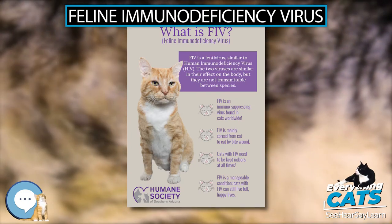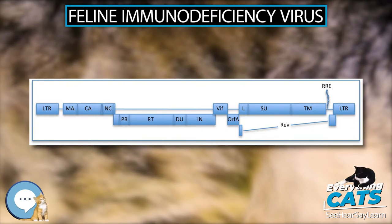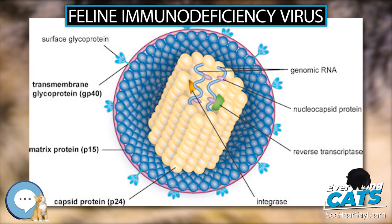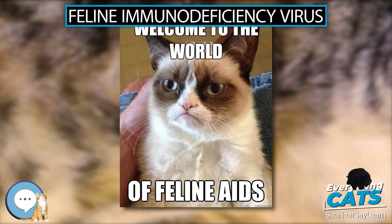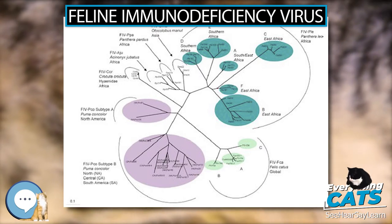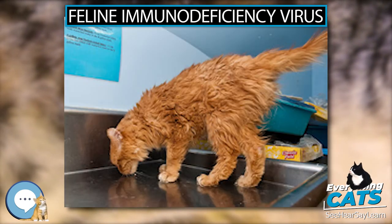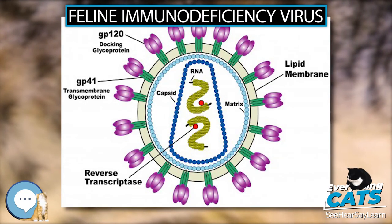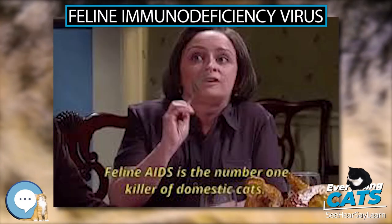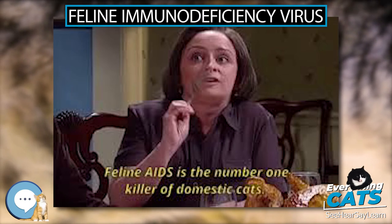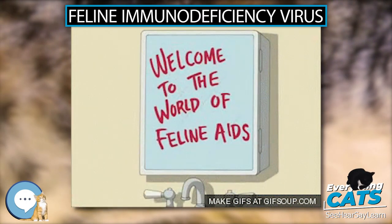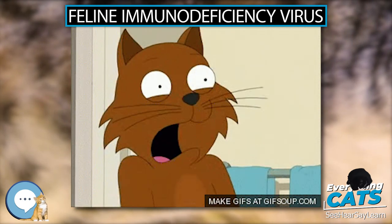Kittens and young cats that test positive for the FIV antibody may test negative at a later time due to seroreversion, provided they have never been infected with FIV and have never been immunized with the FIV vaccine. Cats that have been vaccinated will test positive for the FIV antibody for the rest of their lives owing to seroconversion, even though they are not infected. Therefore, testing of strays or adopted cats is inconclusive, since it is impossible to know whether they have been vaccinated in the past. For these reasons, a positive FIV antibody test by itself should never be used as a criterion for euthanasia. Early detection helps maintain the cat's health and prevents spreading infection to other cats, and with proper care, infected cats can live long and healthy lives.